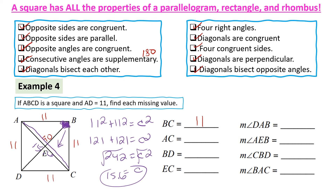BD is also 15.6 because in a square the diagonals are congruent. EC is half of AC because diagonals bisect each other, so 15.6 divided by 2 equals 7.8.